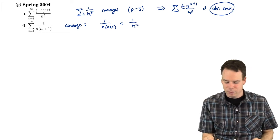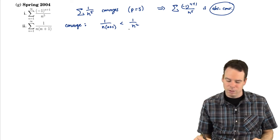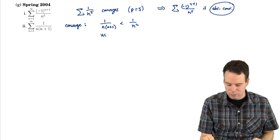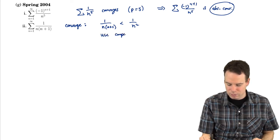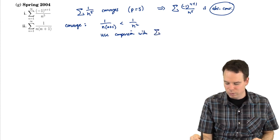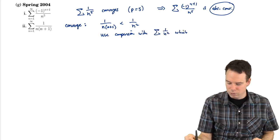Because n plus 1, when I divide by it, makes the thing smaller than just dividing by n. And then there was that other factor of n in the denominator. So this thing is smaller than that. Use comparison with 1 over n squared, which converges.